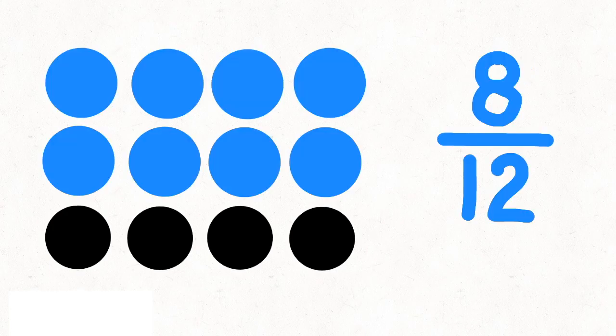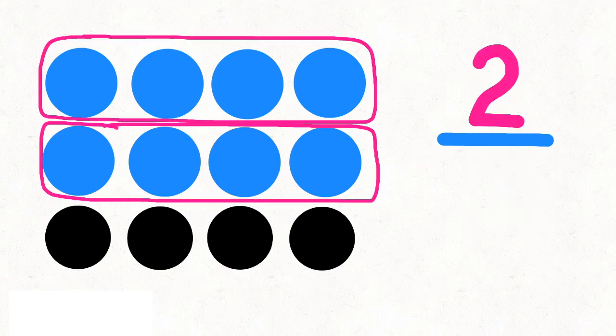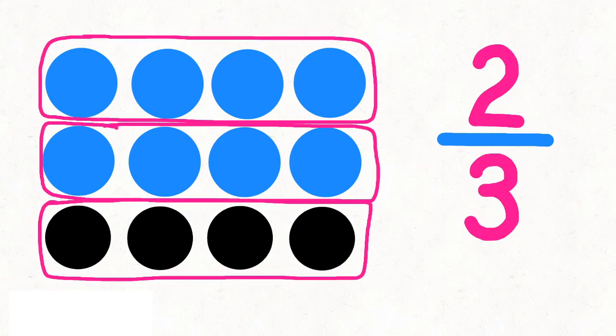For the next one, let's color 8 of the dots. Look closely and you'll see that there are 3 groups of 4 in 12, and I've colored in 2 of them. So I've colored 2 thirds of the dots. So 8 twelfths is equivalent to 2 thirds.